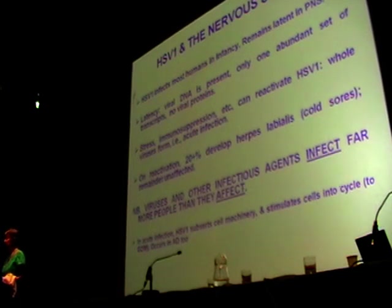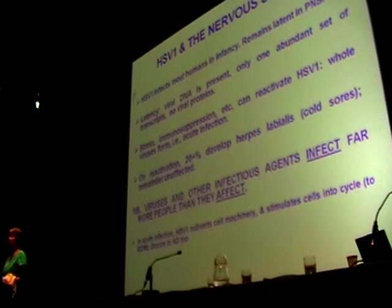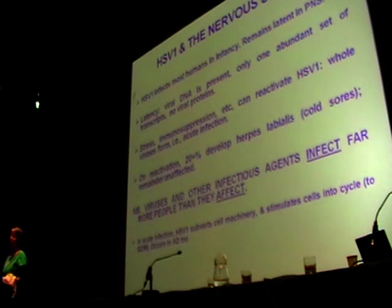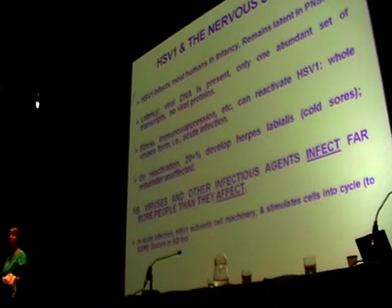However, stress, immunosuppression, and so on can reactivate the virus. And when that happens, you get whole viruses formed and you get an acute infection. On reactivation in the peripheral nervous system, something like 20-plus percent of people develop herpes labialis — cold sores or fever blisters. The remainder show no clinical signs of reactivation, even though they do reactivate.